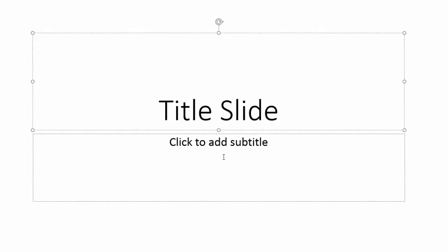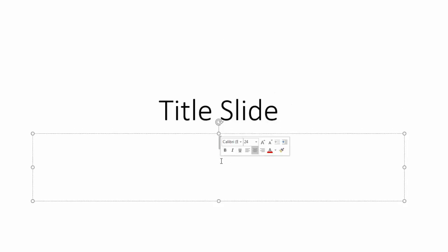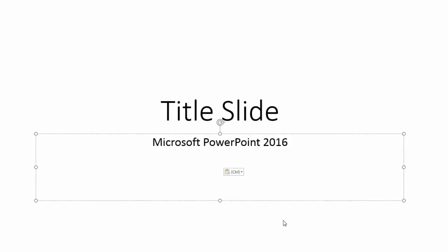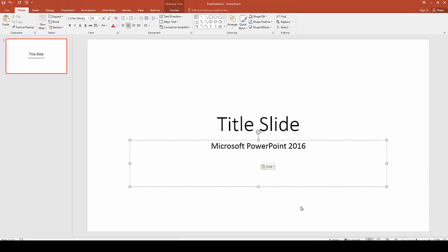This box here is the subtitle box. Do the same, click to add a subtitle. Click anywhere outside the box to remove the dotted lines.